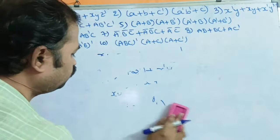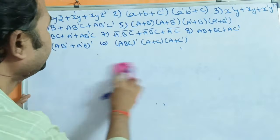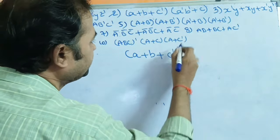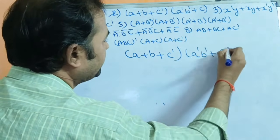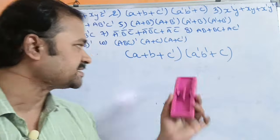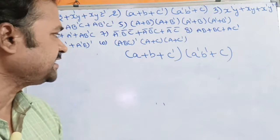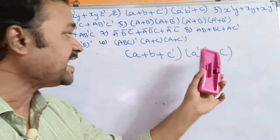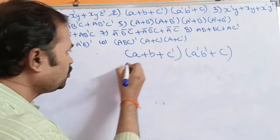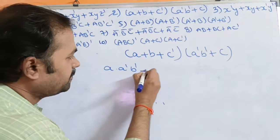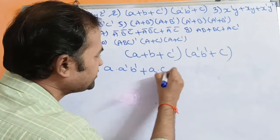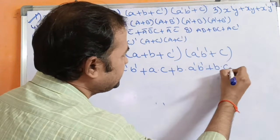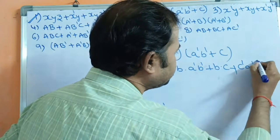Now let us solve the second example: (a + b + c')(a'b' + c). We expand by multiplying each term: a·(a'b') + a·c + b·(a'b') + b·c + c'·(a'b') + c'·c.